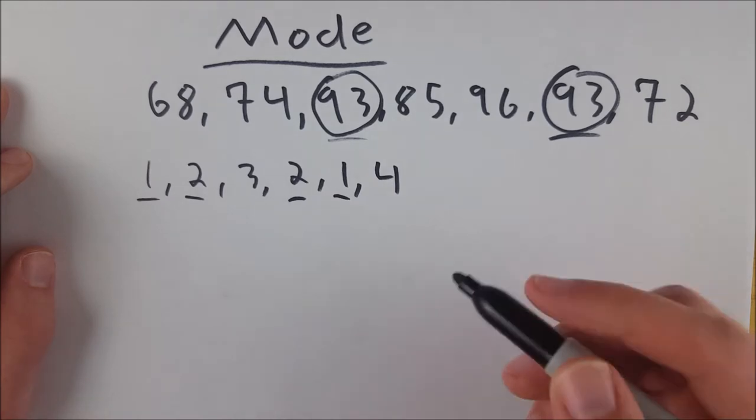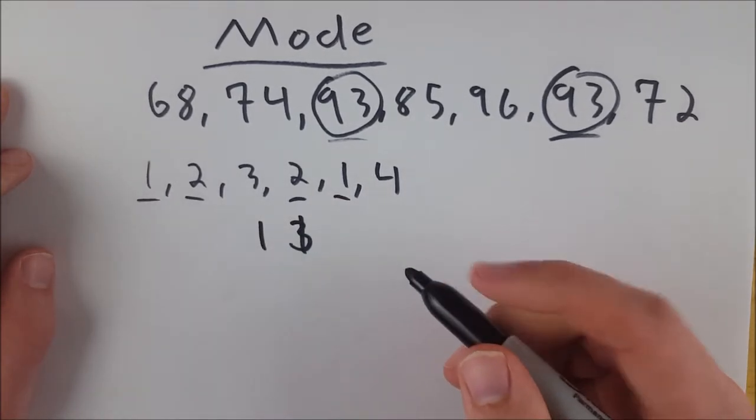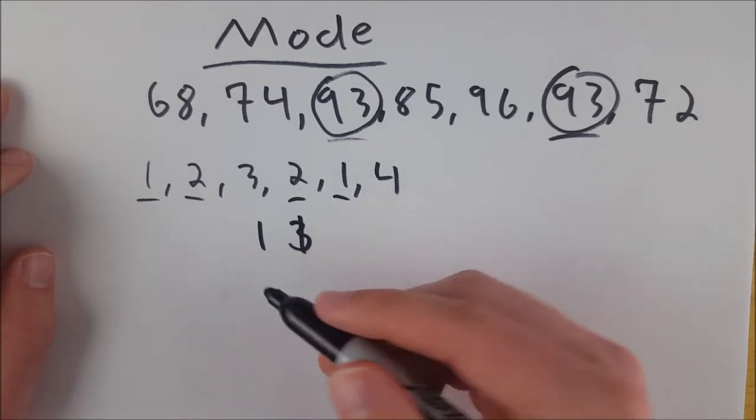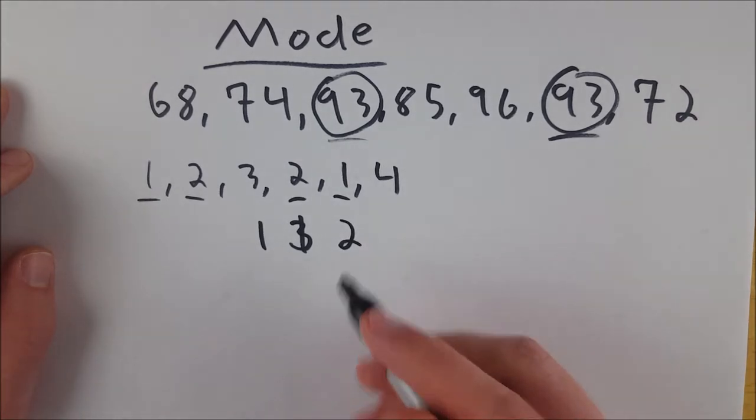This we could call bimodal because it has two modes. It has one as a mode, which pops up twice, and it has two as a mode, which pops up twice. So these are both modes.